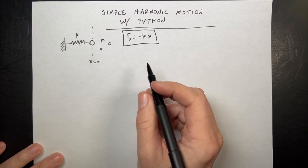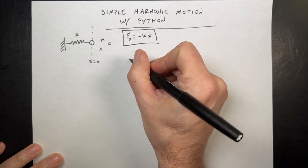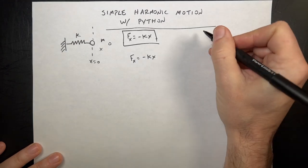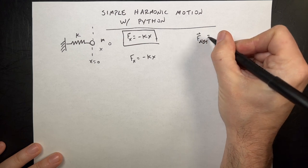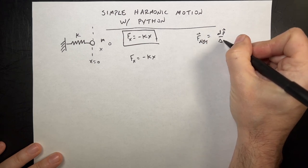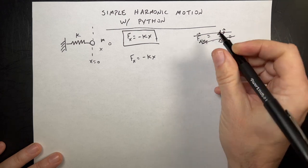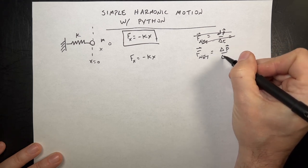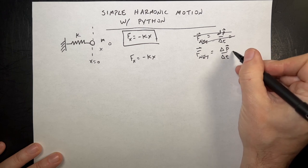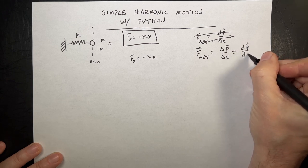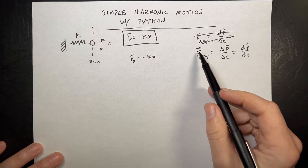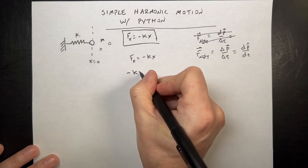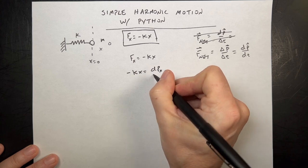Let's set that equal to and use it with our momentum principle in one dimension. I can say F_x equals negative kx. The momentum principle says F_net is the change in momentum with respect to t. We can write that as a derivative — and that's what we're going to use today. It's a derivative of momentum. We're just in the x direction, so we only deal with the x momentum. So I can say negative kx is going to be equal to dp_x/dt.